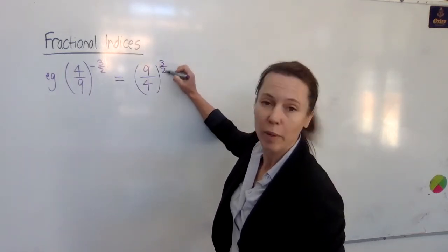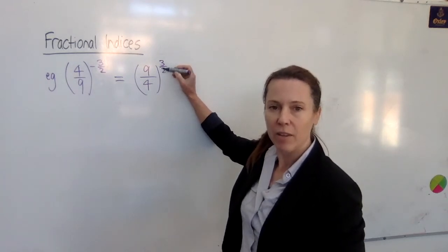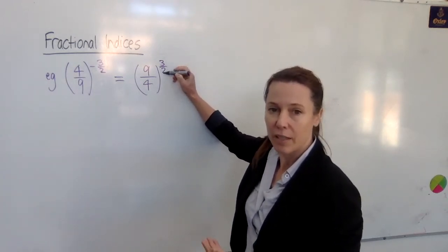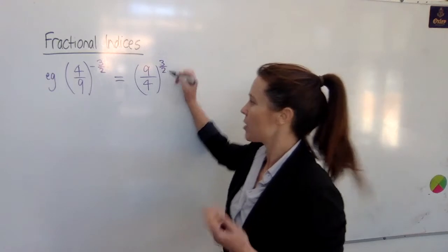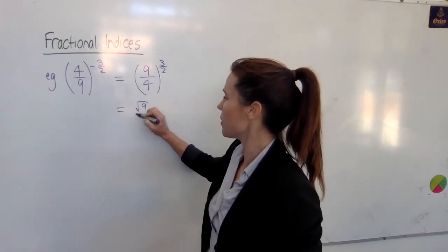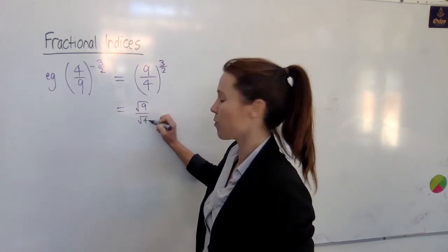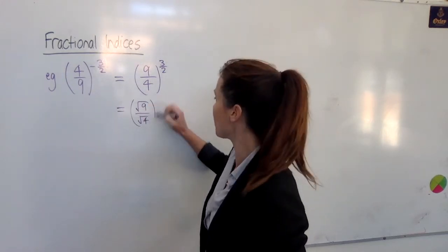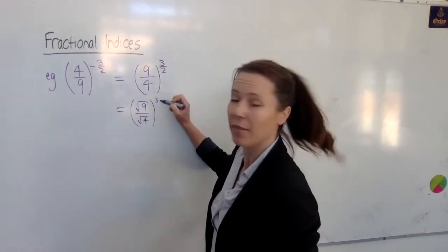Next I want to take care of the two part of this expression. Now I know that raising something to the power of half is the same as finding the square root of it. So I could do this in my head, but just to show you what I'm basically finding there is the square root of nine and I'm finding the square root of four, and I'm raising the whole thing then still to the power of three because I haven't done that yet. I'm just doing the half part.